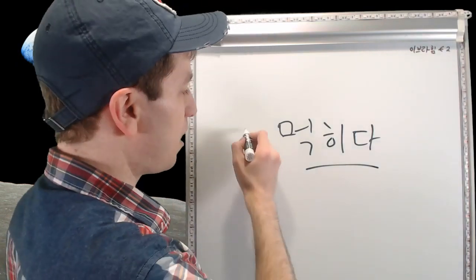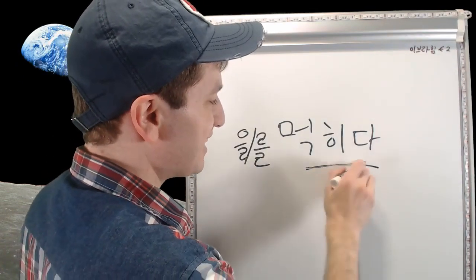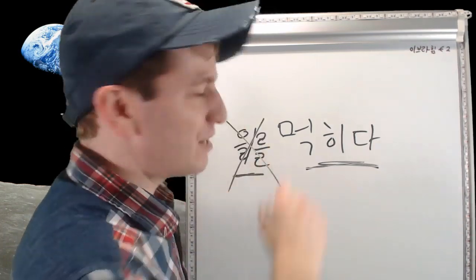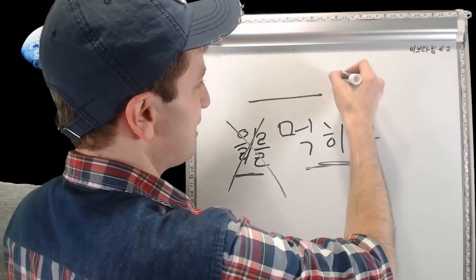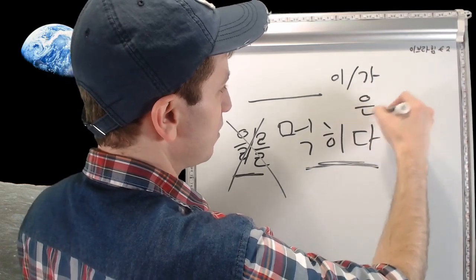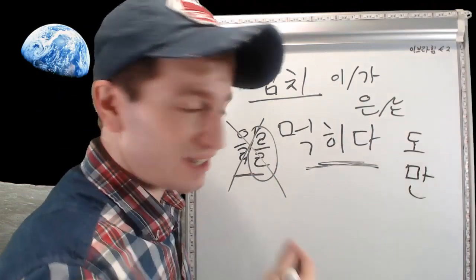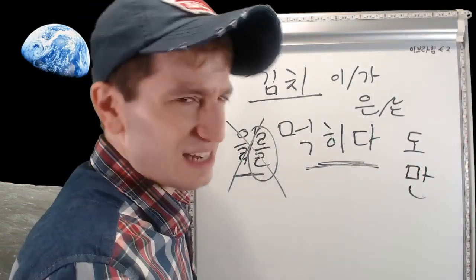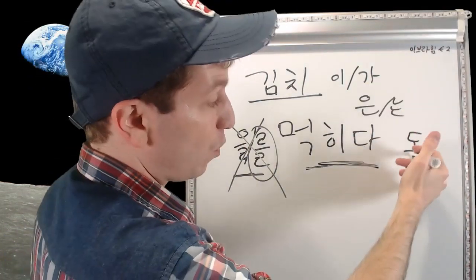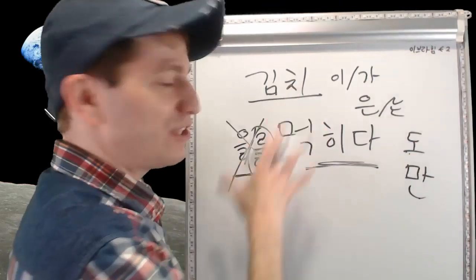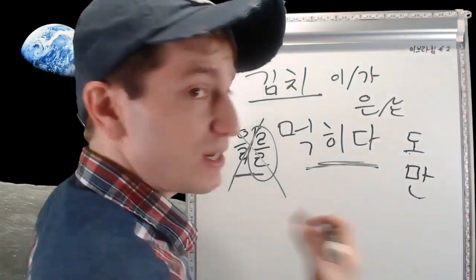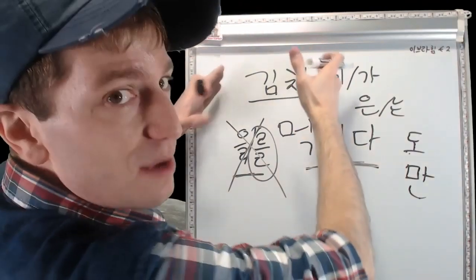You cannot use passive verbs with an object marker. In a passive sentence, the thing being acted upon is the subject — so you'd mark it with the subject marker 이/가, the topic marker 은/는, or particles like 도 (also) or 만 (only). You cannot say 김치를 먹혔어요 — that makes no sense. 김치가, 김치는, 김치도, 김치만 — those are all fine. A quick pro tip: if you see an object marker used with a verb, it is 100% an active verb, not a passive verb.